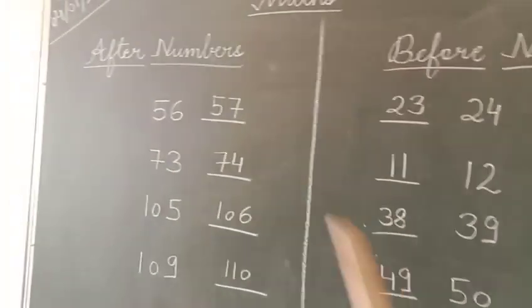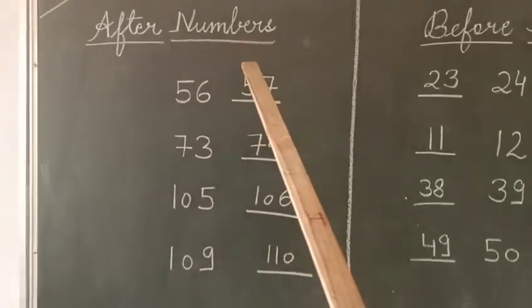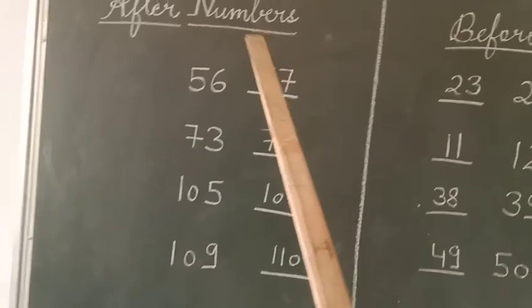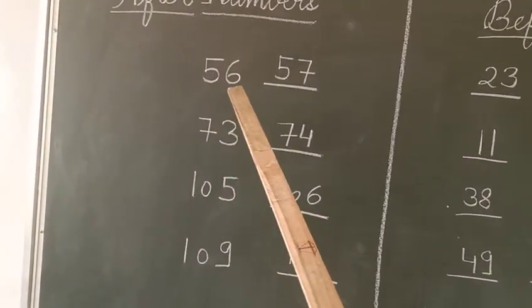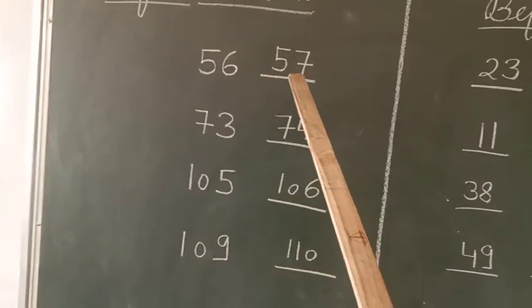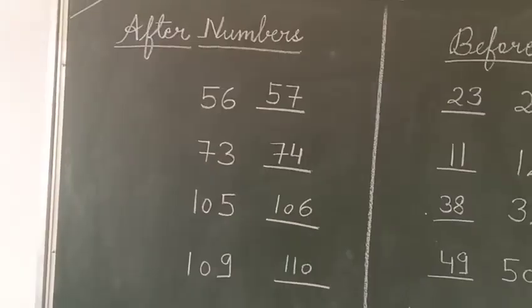So you can see the heading that has been written on the board, after numbers. These are the numbers. You have to see the numbers and you have to tell with me what comes after that number. Let us start.